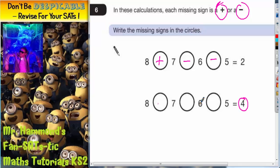And they're the same numbers here - 8, 7, 6 and 5. So actually we've accidentally stumbled across the correct answer for the bottom one. So 8 add 7 is 15, 15 take away 6 is 9, and 9 take away 5 is 4. So that bottom one is correct.